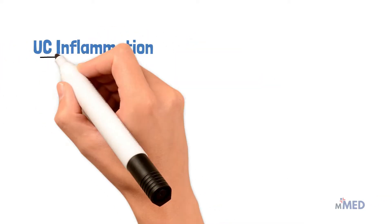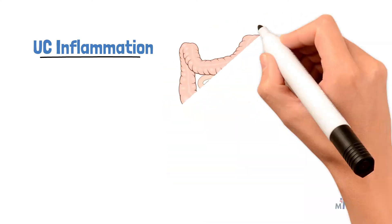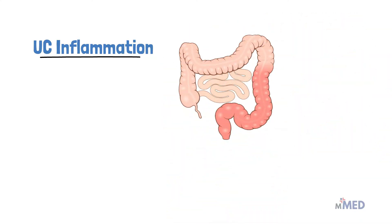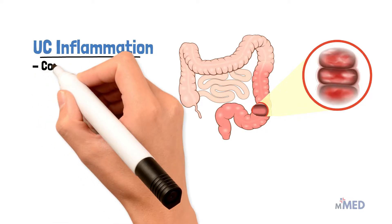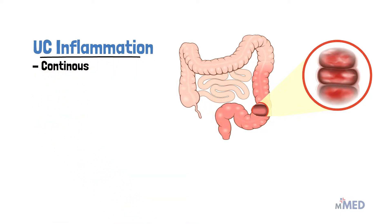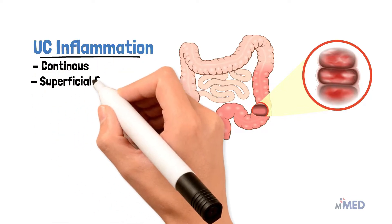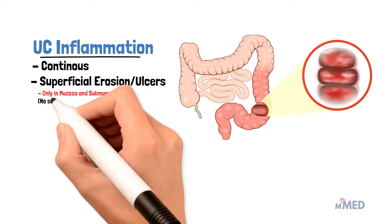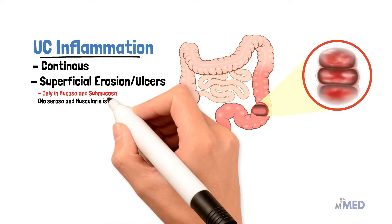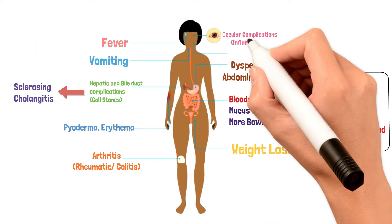The main pathological features of ulcerative colitis inflammation include continuous inflammation, in contrast to the patchy lesions seen in Crohn's disease. You can find superficial erosions or ulcers which involve only the mucosa and the submucosa. Unlike Crohn's disease, no serosa or muscularis is involved.